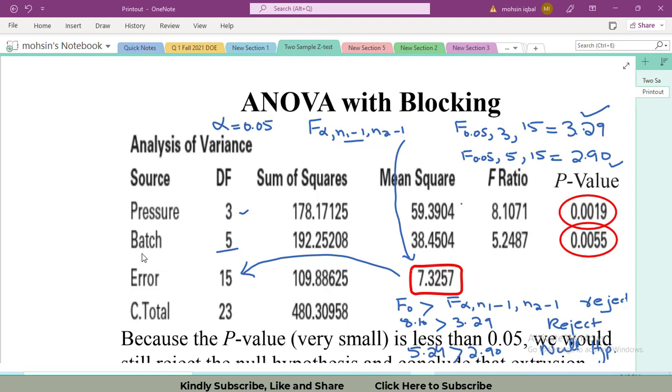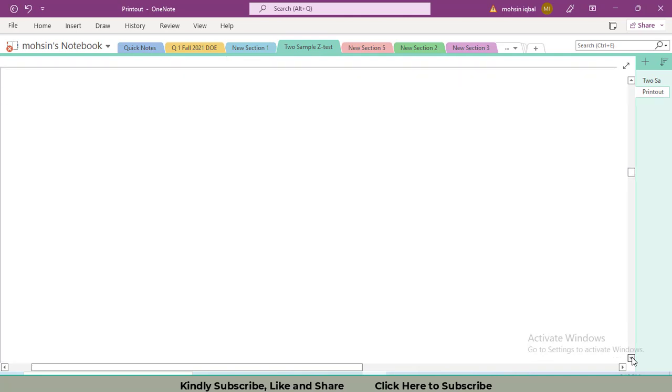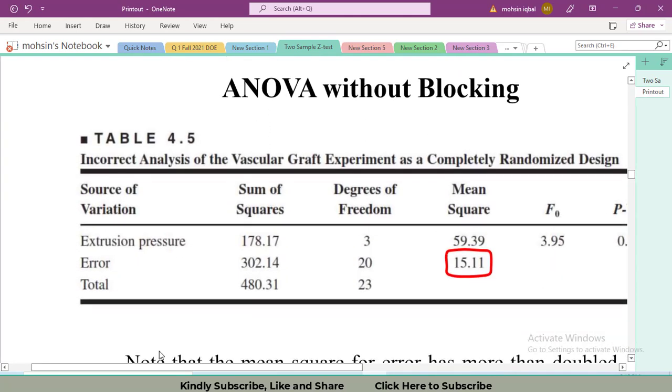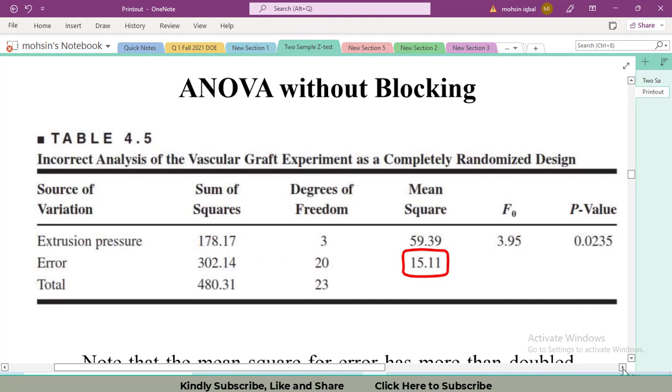However, if we haven't taken this factor batches, the nuisance factor, into our account, what would happen? Our calculations for pressure would remain the same. The ANOVA has been calculated without taking into account the batch to batch variation or the block. In this way, the data for the nuisance factor has been included in the error term. So our MS error value has been compromised, and this will directly affect my F statistic value. That's why my results are not accurate if I ignore nuisance factors.